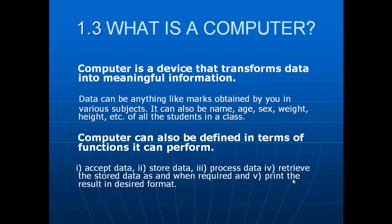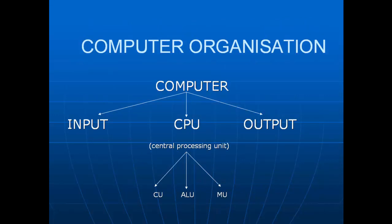Next is computer organization. The computer is mainly classified into three categories: input unit, CPU, and output unit. The CPU is again classified into three sub-categories: CU (Control Unit), ALU (Arithmetic and Logic Unit), and MU (Memory Unit).